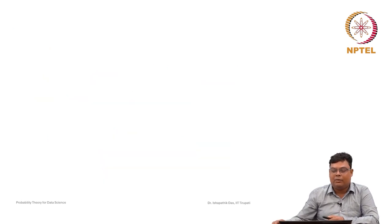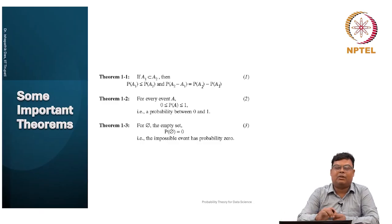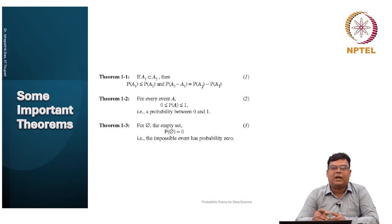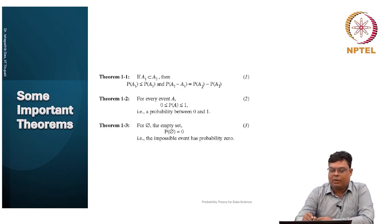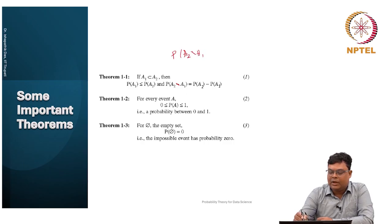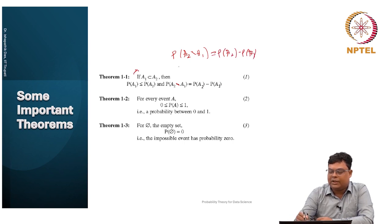Some important theorems we will prove here, because all those theorems we will frequently use in the future. It is important that we know they are really correct, so we have to prove them first. Let us discuss Theorem 1.1: if A1 is a subset of A2, then P(A1) ≤ P(A2), and P(A2 minus A1) = P(A2) minus P(A1). In set theory, A2 minus A1 means all elements in A2 that do not belong to A1.